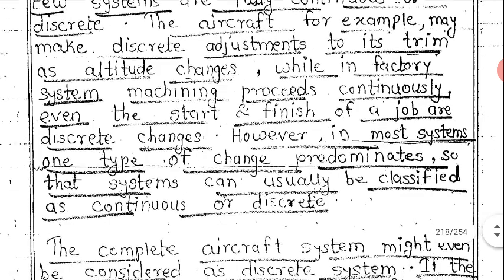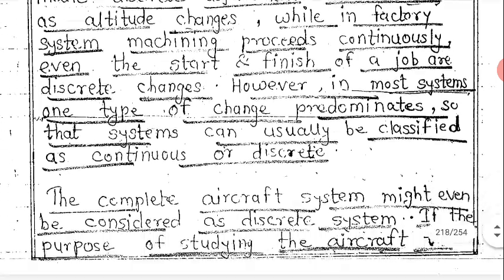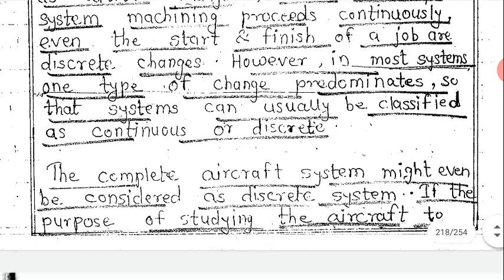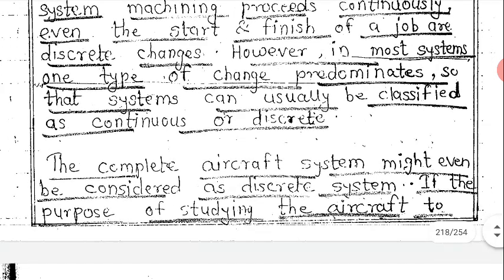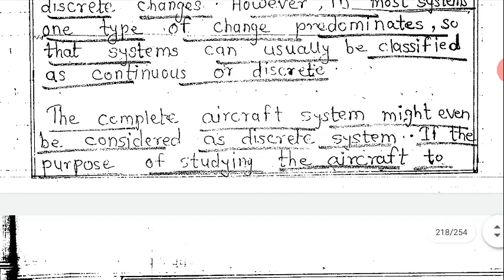Even with the start and finish of a job, which are discrete changes, in most systems one type of change predominates. So a system can usually be classified as either continuous or discrete based on which type of change is dominant.